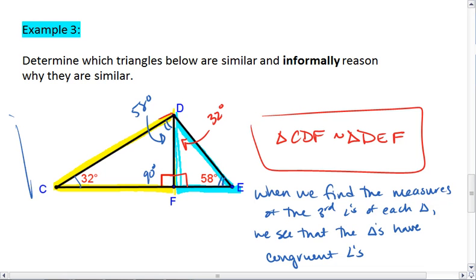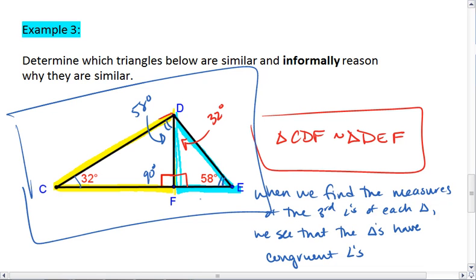If you want to, as long as you marked these angles and showed me that 58 is congruent to 58, 90 to 90, and 32 to 32,